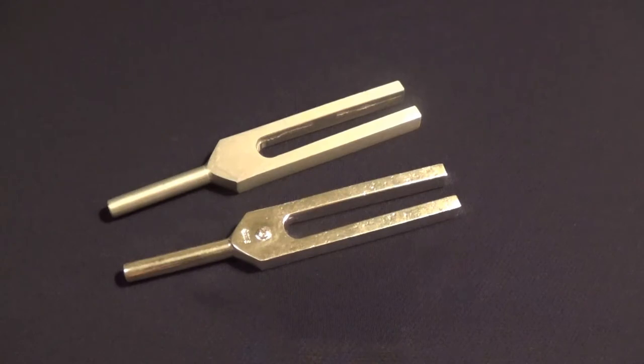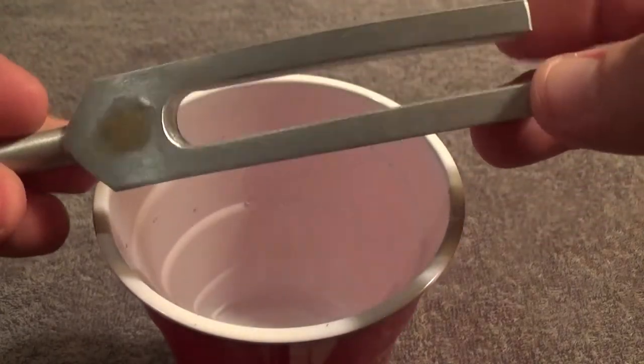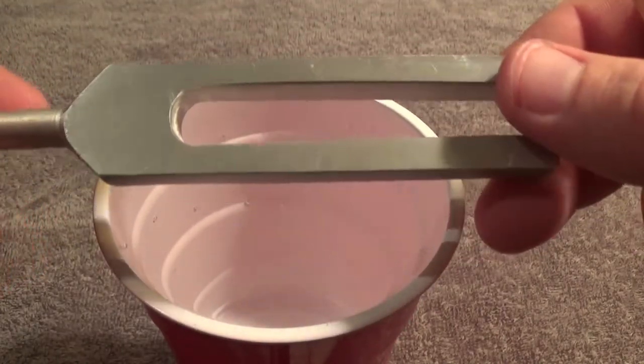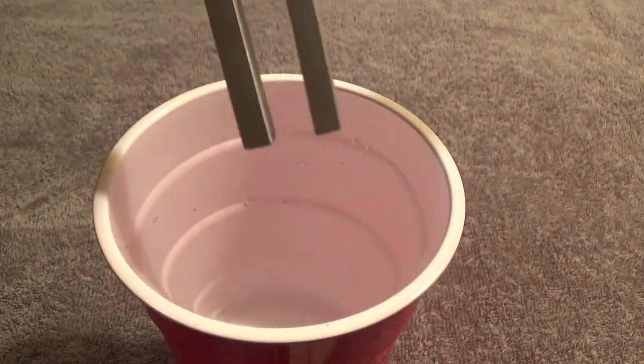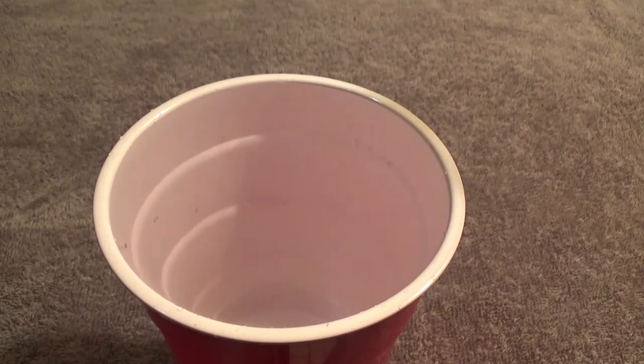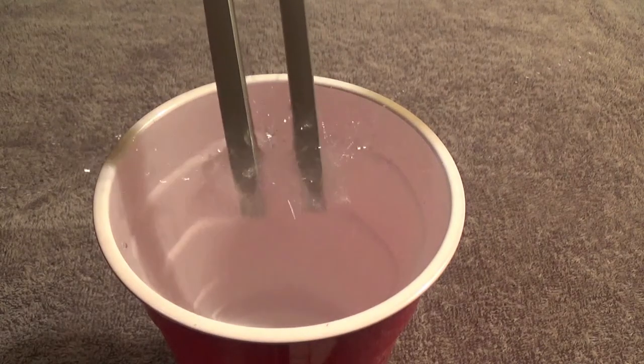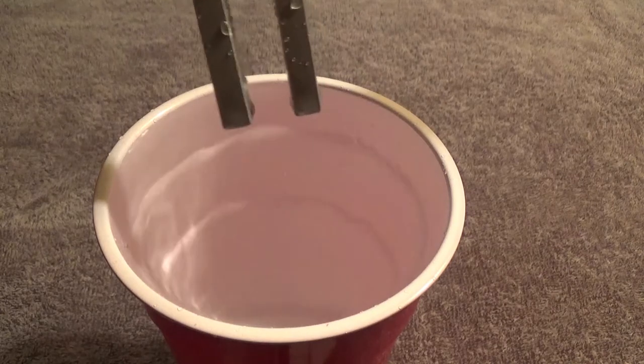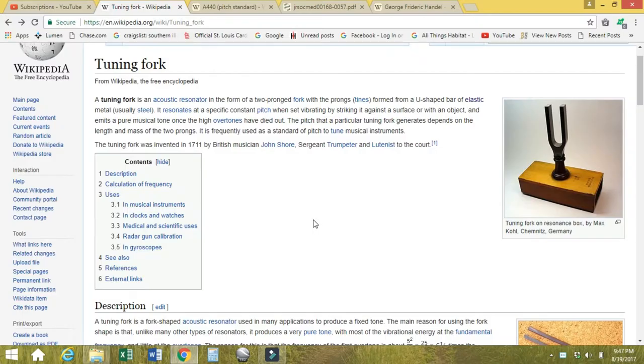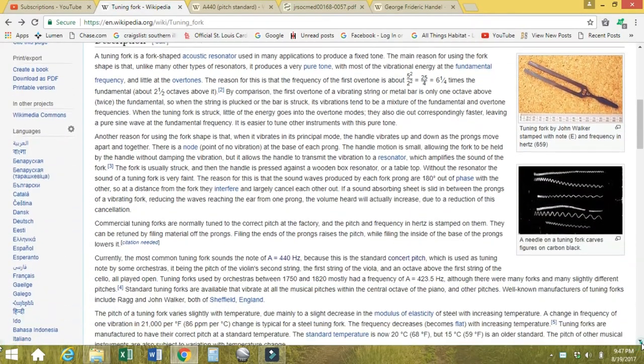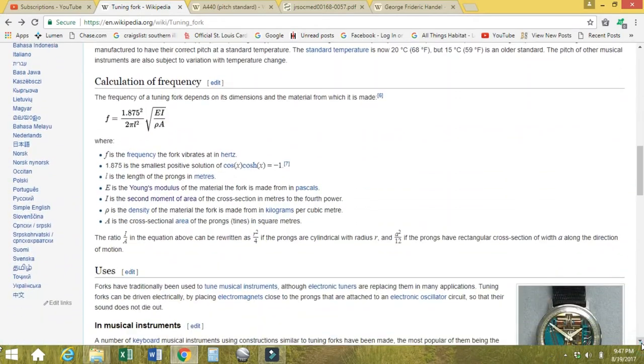We're gonna look into the whys and hows and the whats of what we did here. The tuning fork of course works because of the vibration of the tines when it is struck. This is the aluminum one. Let's take a look at the wiki for a tuning fork: acoustic resonator, two-pronged fork.